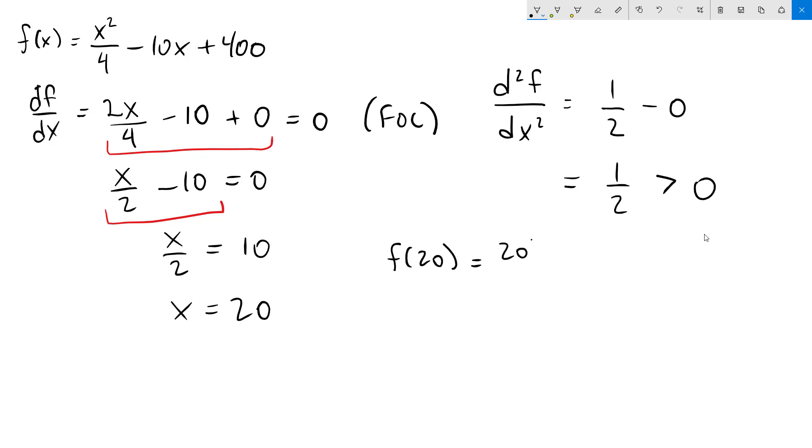So we get 20 squared over 4 minus 10 times 20 plus 400. 20 squared is 400 minus 10 times 20, which is 200, plus 400.